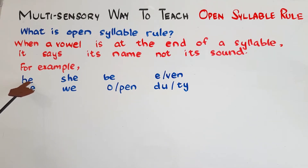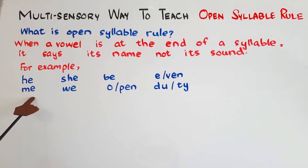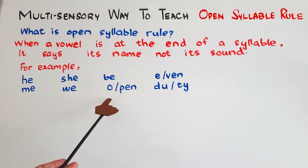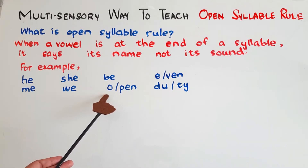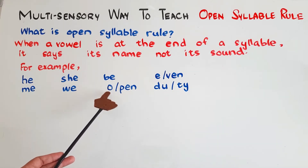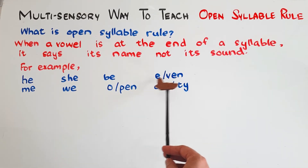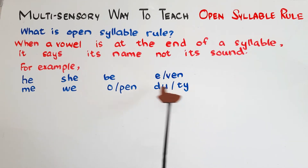H-E: 'he.' M-E: 'me.' The vowel is at the end of the syllable and it's saying its name. 'She,' 'we,' 'be.' 'Open' — a disyllabic word. Two syllables are here and the first syllable is ending at a vowel. 'Open,' 'even,' 'duty' — these all follow the open syllable rule.